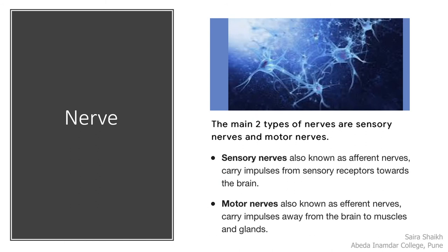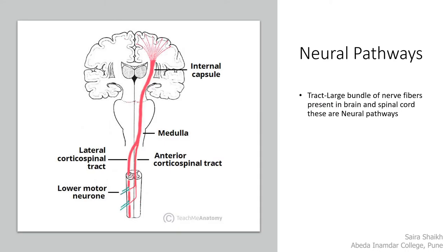Nerves are classified into two types: sensory nerves and motor nerves. Sensory nerves, also known as afferent nerves, carry the impulse from the sensory receptor towards the brain. Motor nerves, also called efferent nerves, carry the impulse away from the brain towards muscles and glands. Receptors are the sensitive regions which receive the stimuli. A tract is a large bundle of nerve fibers present in the brain and spinal cord — these neural pathways carry the impulse from the brain towards the spinal cord or vice versa.